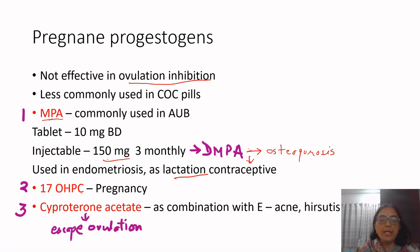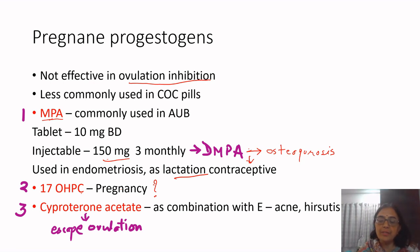17-alpha hydroxyprogesterone caproate is used in pregnancy for cases of threatened abortion or preterm labour, but the current evidence is not strong enough — there are insufficient randomized controlled trials to show its efficacy for favourable outcomes in threatened abortion, recurrent pregnancy loss, or preterm labour.